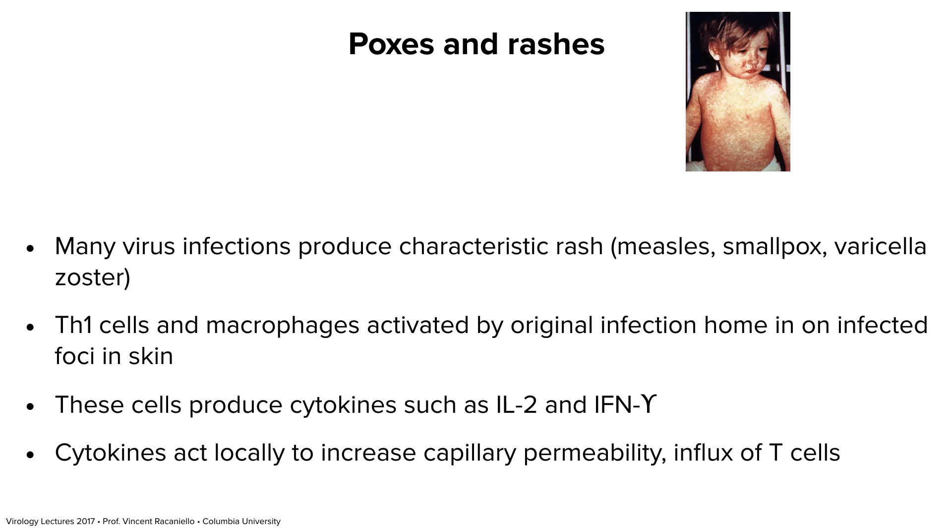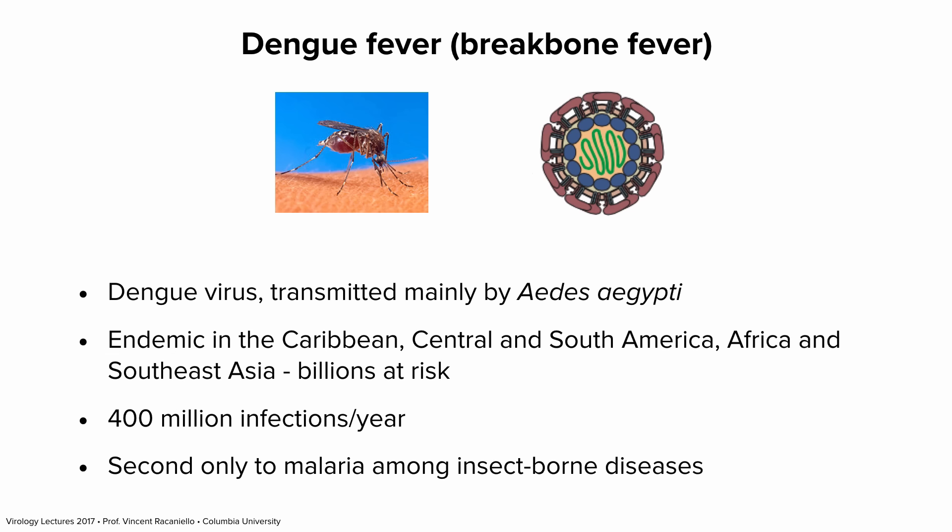Many virus infections cause rashes — measles, smallpox, varicella zoster (chickenpox), shingles. These are typically immune-mediated rashes. T cells or macrophages home in on infections in the skin — the virus infects skin cells brought there via the blood, and immune cells go in to clear the infection. They produce cytokines, you get increased capillary permeability — which is why some rashes are red — and an influx of T cells. It's an interaction of T cells with infected cells that produces the typical rash.